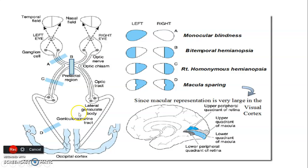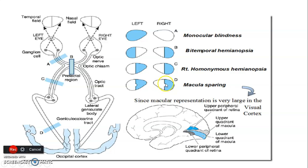At lesion D — in the optic radiation — there is usually macular sparing. You still get right homonymous hemianopia because these fibers carry the same visual information as those in the optic tract. However, the macular region, the central portion of the visual field, is spared because it receives a different source of blood supply.